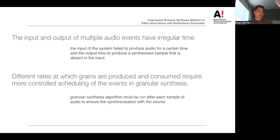Different rates at which grains are produced and consumed require more controlled scheduling of the audio processing in the granular synthesis. Usually, these algorithms rely on the complete stream of audio samples, so that the granular synthesis must be run after each sample of audio to take care of the synchronization with the source. Not being able to synchronize these granular features, such as if audio processing events are not time aligned, may cause overlaps, gaps in the output signal, and the output may play out of order and cause undesirable results.